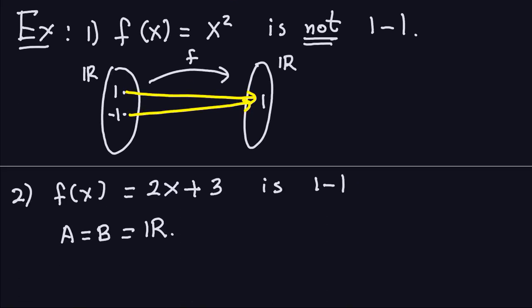Now consider the function f(x) = 2x + 3, where the inputs and outputs are also the real numbers. This actually is a one-to-one function. You can check this — if you think about the picture, every time you put two different numbers in, you'll get different outputs. So this function is one-to-one.